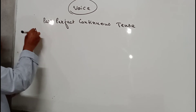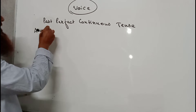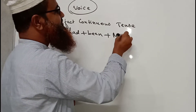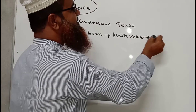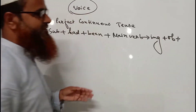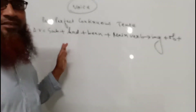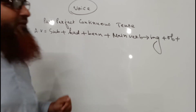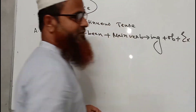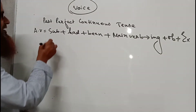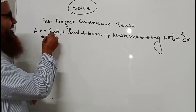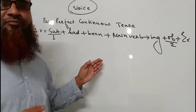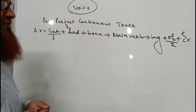I am writing here the active voice of past perfect continuous tense. The structure is: subject, then 'had', then 'been', then the main verb with '-ing', then there will be an object. There must be an object because in passive voice we have to make that object a subject. Otherwise no voice change is possible without an object in the sentence. If there is something else, we write it as an extension.